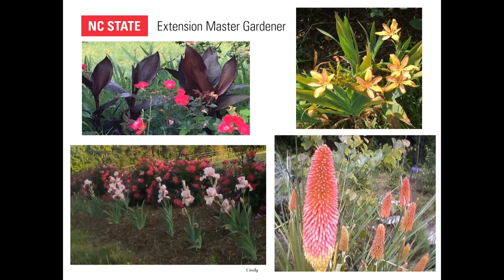Red hot pokers — this particular one is Lola, gets to be about that big. They come in all different colors and sizes. You can get little small ones, the Popsicle size. My favorite is called Toffee Nose — only gets to be about that big, a tan and brown color that I just love. Then you can get the Lolas which are four to five feet tall. They do multiply and you can take them and divide them when they get overcrowded.